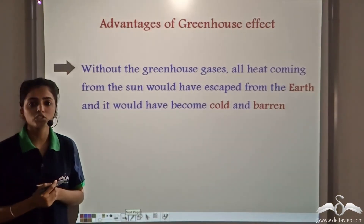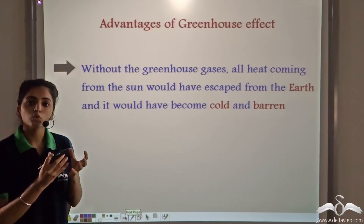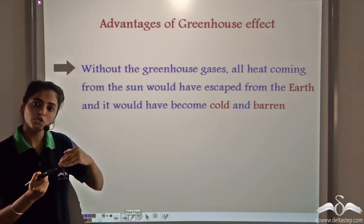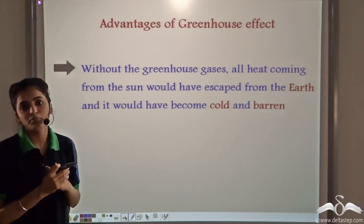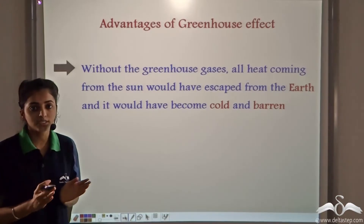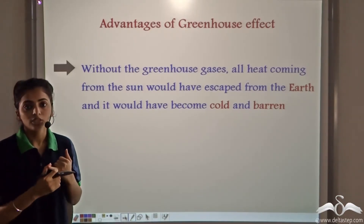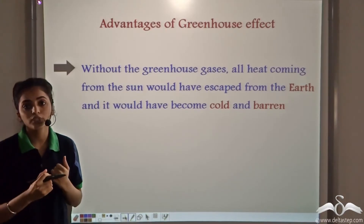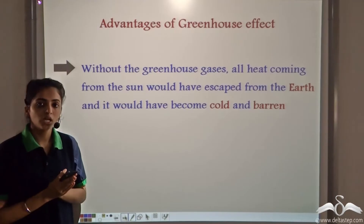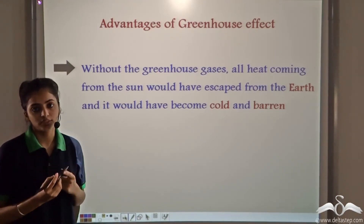The advantages of greenhouse effect: had there been no gases to absorb the radiations of the sun, all the radiations falling on earth would have been reflected back, and hence there would be no heat on the earth's surface — it would be cold and barren. Which means no life would have been possible without greenhouse effect. So, greenhouse effect is very important for the existence of life on earth.